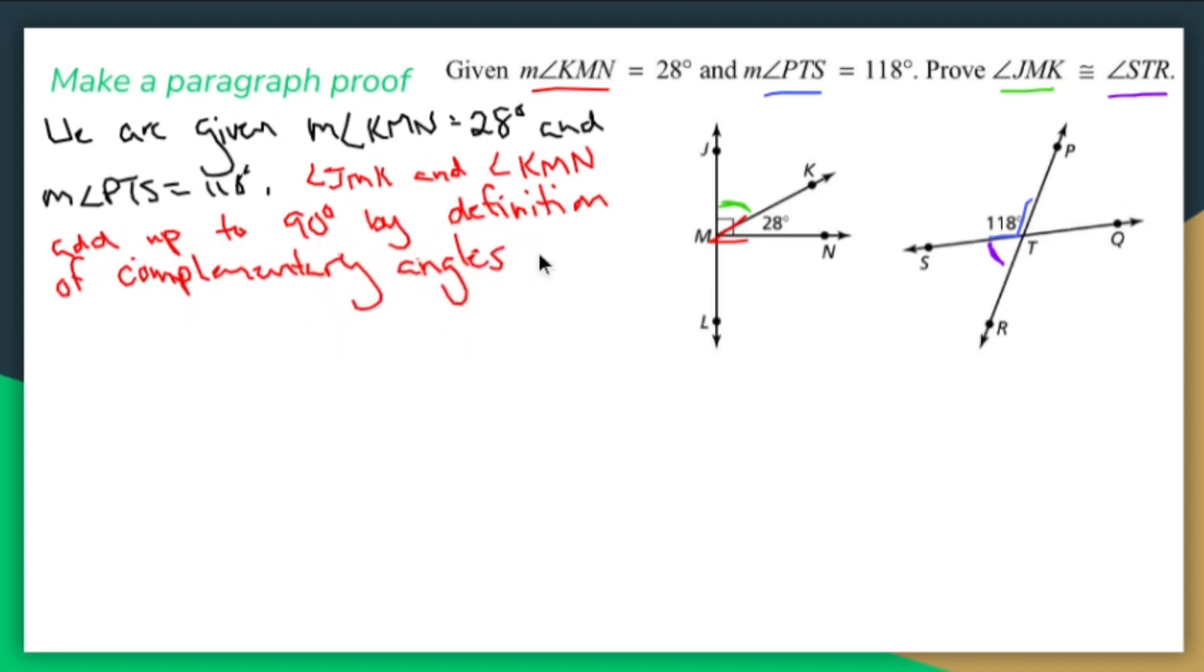So maybe what I should have said is that the measure of angle JMK plus the measure of angle KMN equals 90. Probably a better way to say it.